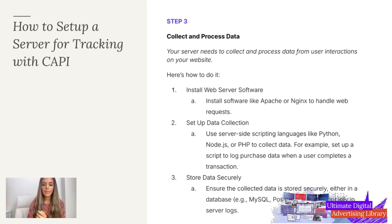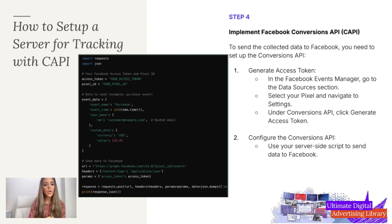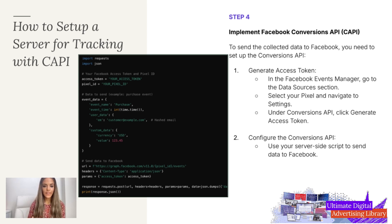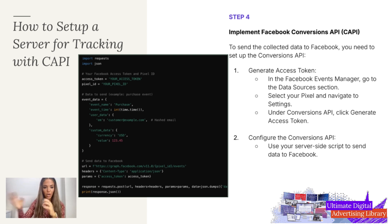Step number four is where you implement the Facebook Conversions API. You have to send the collected data to Facebook, and to do that you use the Conversions API. You generate an access token in the Facebook Events Manager by going to the Data Sources section, selecting your pixel, navigating to Settings, and under Conversions API clicking 'Generate Access Token.' Then you configure the Conversions API using your server-side script to send that data to Facebook using that access token so it matches back to the right account.